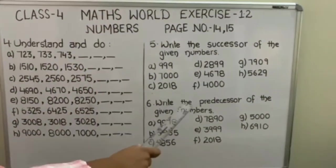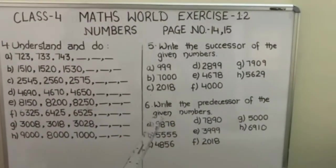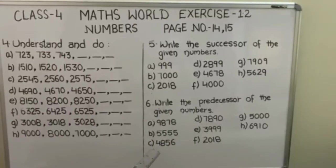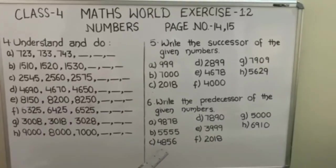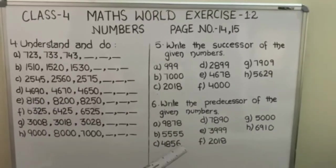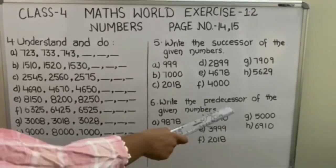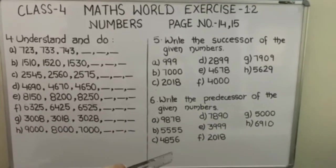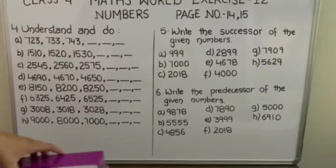Next question is, write the predecessor of the given numbers. We will solve part C. Statement is 4856. Predecessor is the number which comes just before the given number.